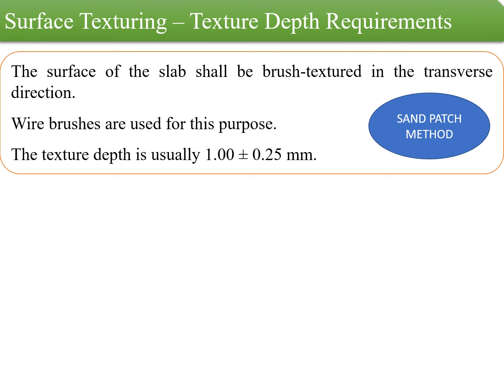The surface of the slab shall be brush-textured in the transverse direction. Wire brushes are used for this purpose. The texture depth generally should average 1.25 millimeters, or 1 plus or minus 0.25 millimeters, meaning the texture depth should be in the range of 0.75 millimeters to 1.25 millimeters. The depth of texture is generally measured using the sand patch method.